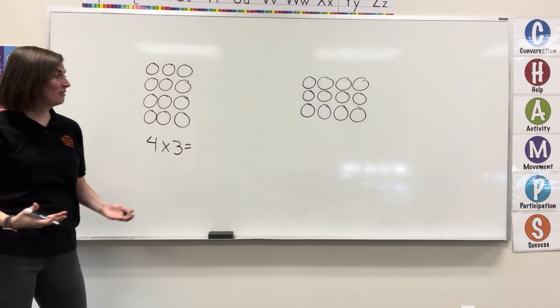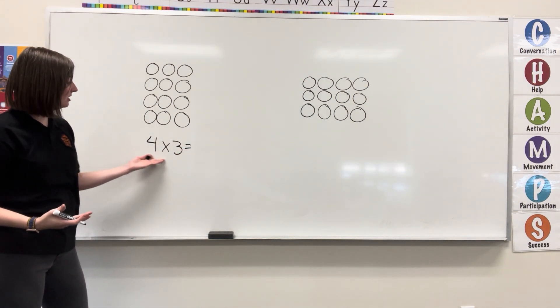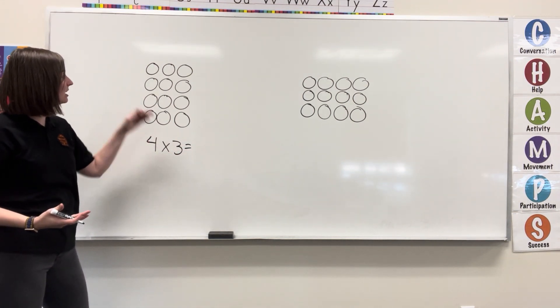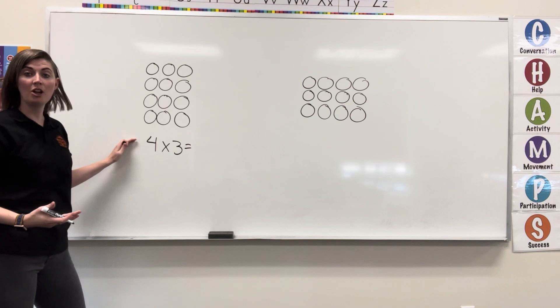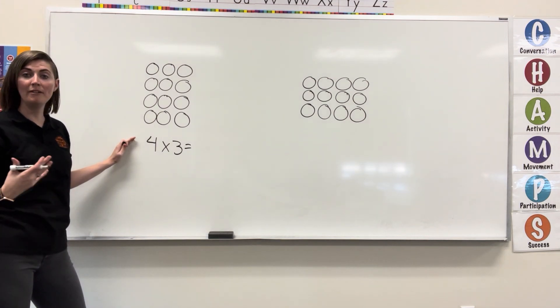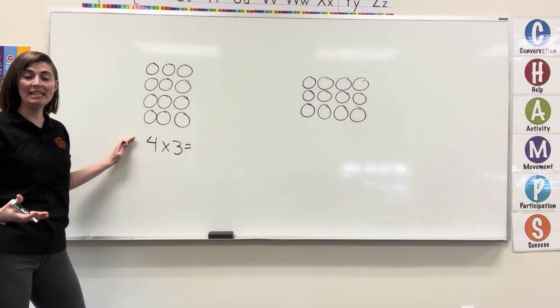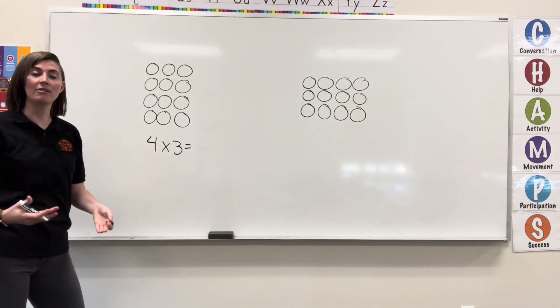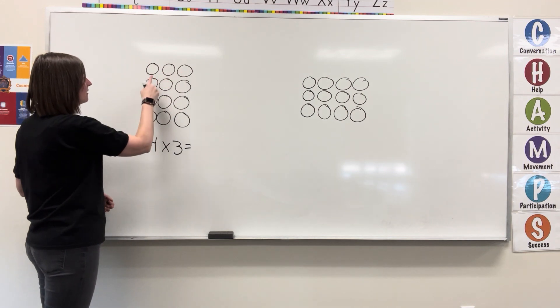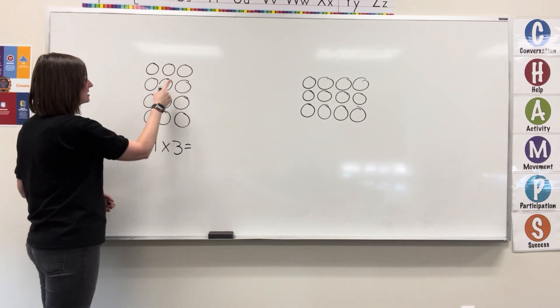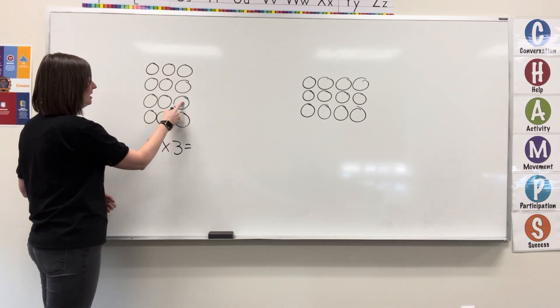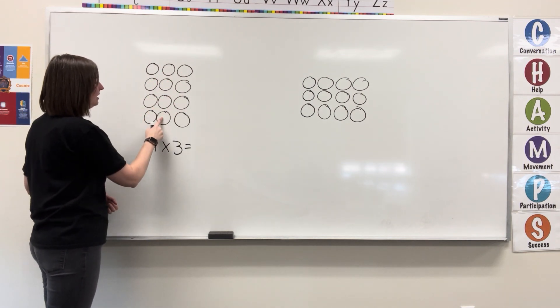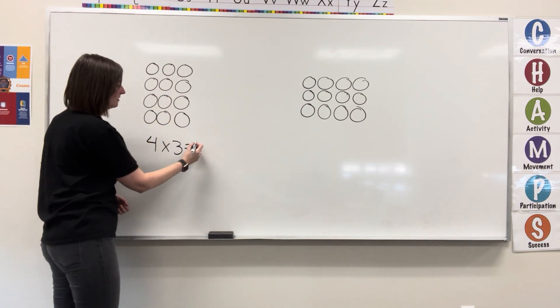Now, I have my expression of 4 times 3. We can solve to find out what 4 times 3 is by counting everything in the array: 1, 2, 3, 4, 5, 6, 7, 8, 9, 10, 11, 12.